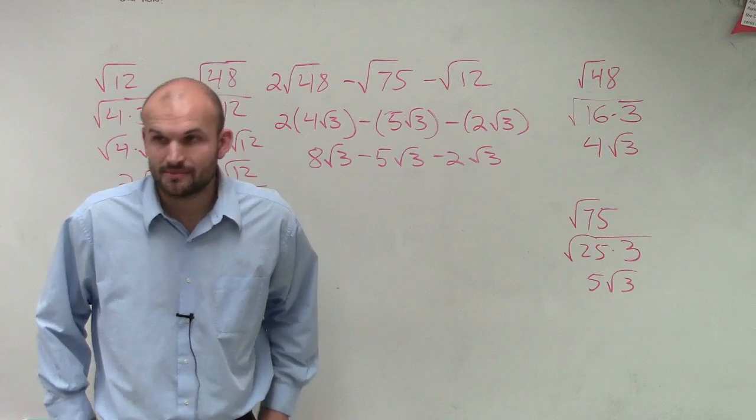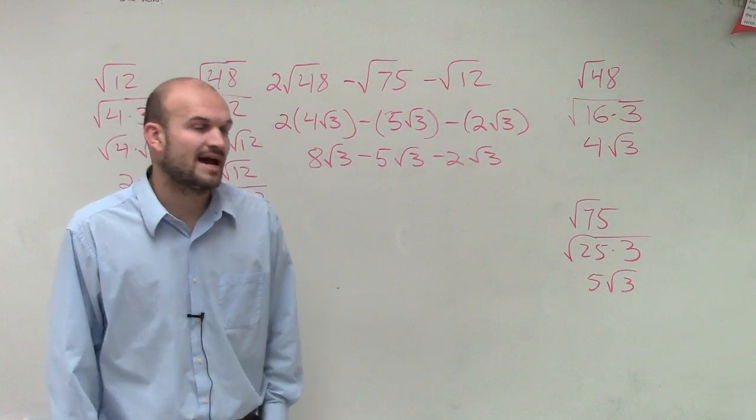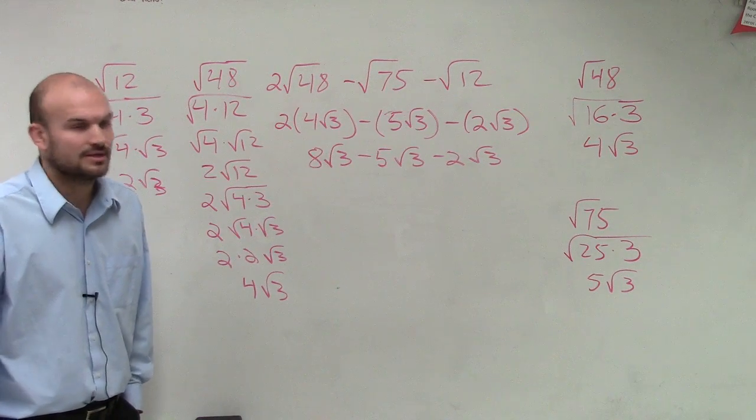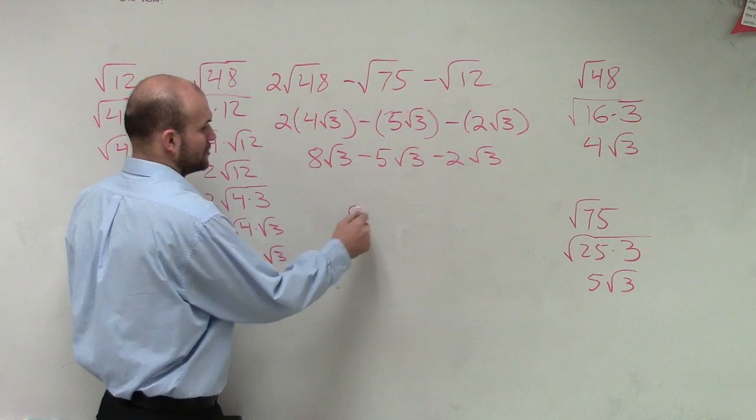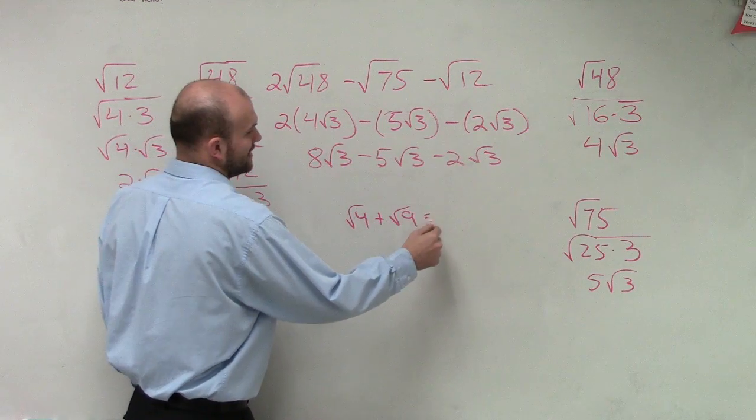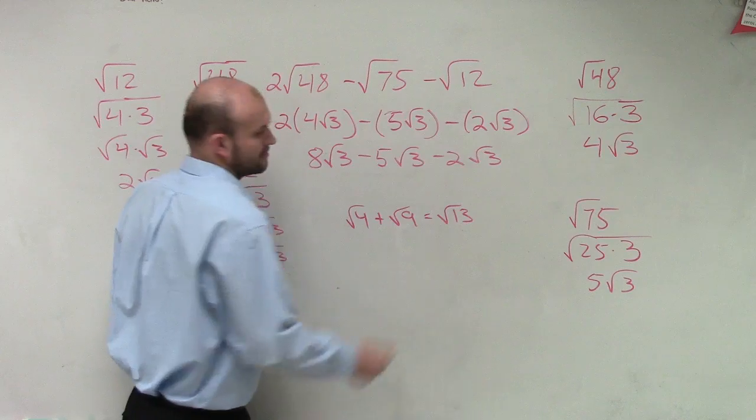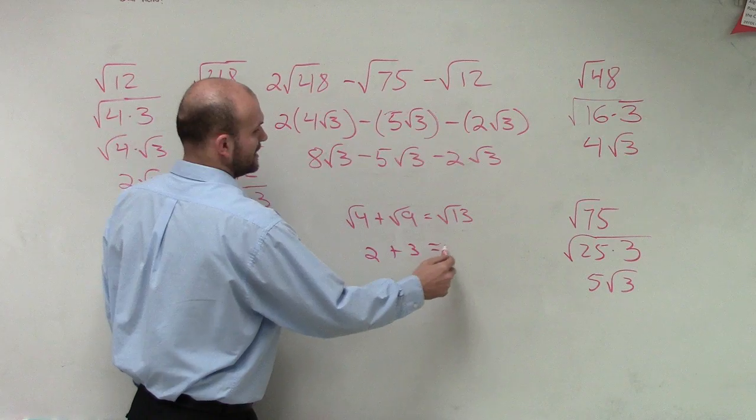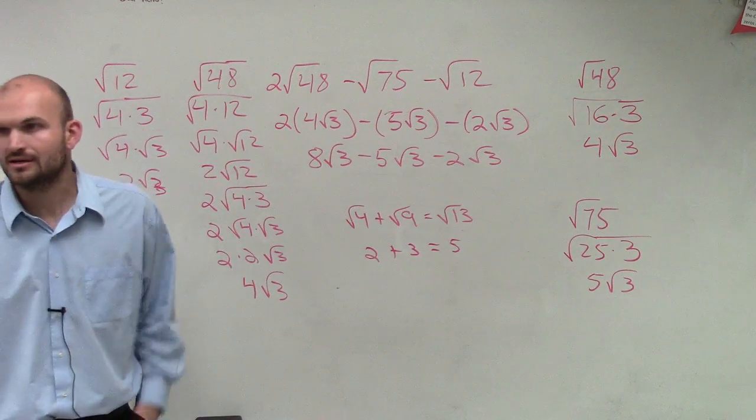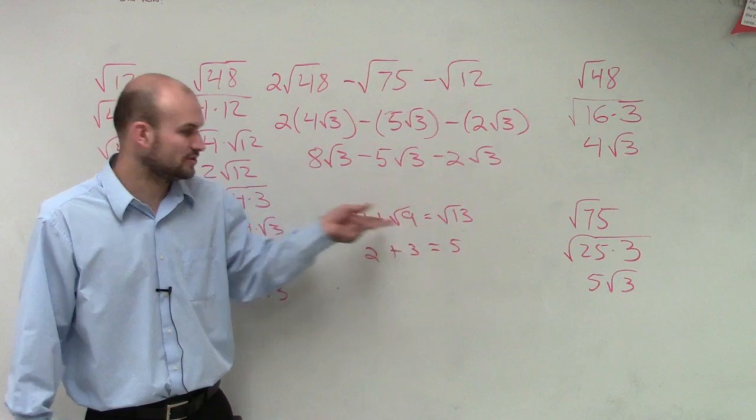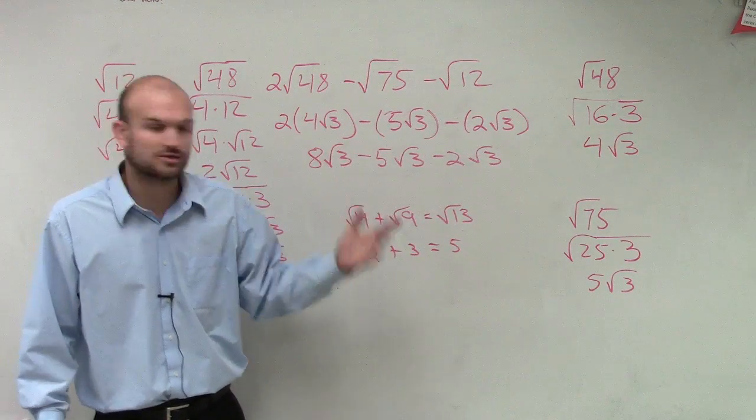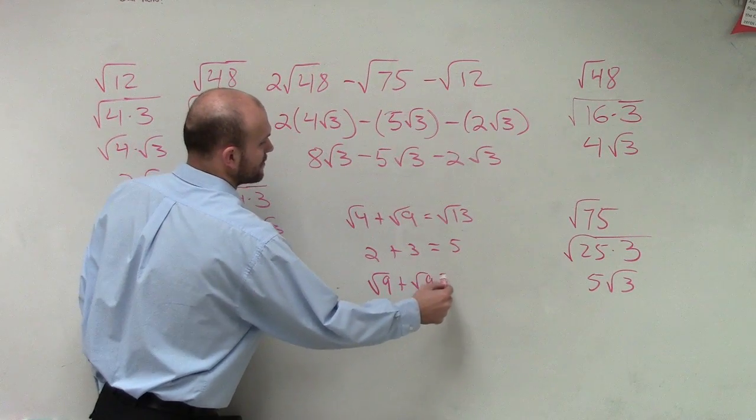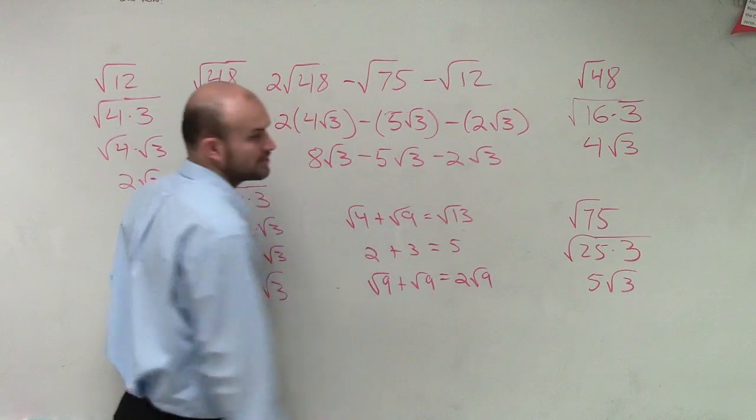So, we've talked about that you cannot go ahead and combine radicals to get your answer. You cannot say the square root of 4 plus the square root of 9 equals the square root of 13. We know that's not true because 2 plus 3 equals 5. The square root of 13 is not 5, right? So, you cannot combine radicals when you have them in the same denominator. So, what do you do then if they are the same? What's the square root of 9 plus the square root of 9? That equals 2 square roots of 9.